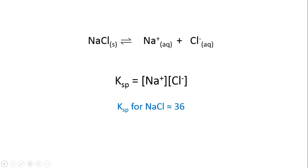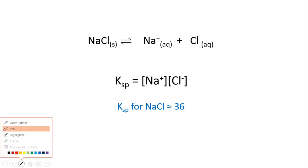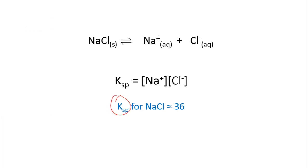It's interesting to note that the value of K_sp for sodium chloride is about 36. This means the concentrations of sodium and chloride ions must be quite high, because when you multiply them together you get a large number like 36. This reflects the fact that sodium chloride is very soluble.